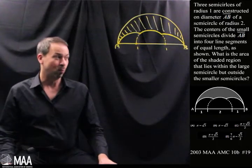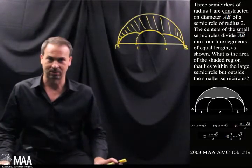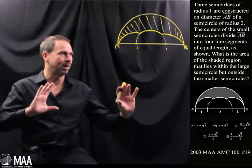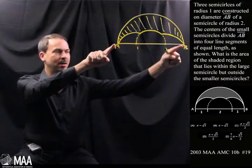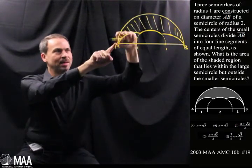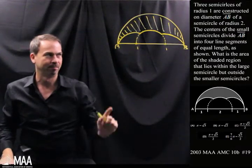Three semicircles of radius 1 are constructed on diameter AB of a semicircle of radius 2. Hang on, that's four semicircles now. There's three semicircles of small radius constructed on the diameter AB of a larger semicircle of radius 2. So here's a big semicircle of radius 2 and yes, there are three semicircles sitting on that diameter. That's the picture.